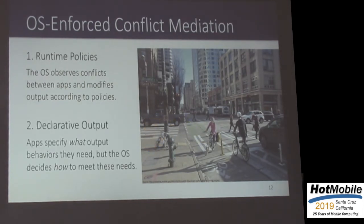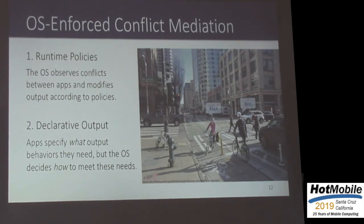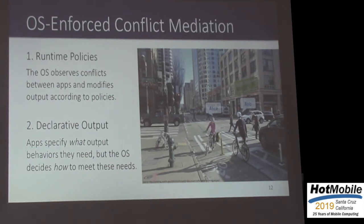The second approach is a declarative output model, where applications specify the kinds of output behaviors they need at a high level, and the OS takes care of the underlying placement and how to satisfy this. For example, you've got a social media app annotating people around you, and a restaurant app displaying ratings above nearby restaurants. Traditionally these apps would have to detect specific information in the physical world and position their own virtual objects at very precise locations. With a declarative output model, the app can say what it wants at a higher level — for example, put me above Alice's head — and then the OS decides how to best satisfy these needs.